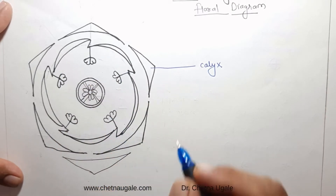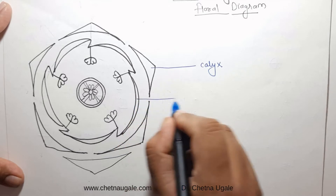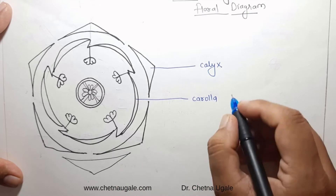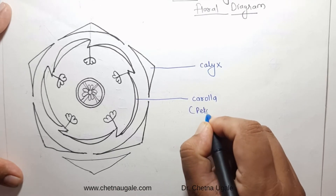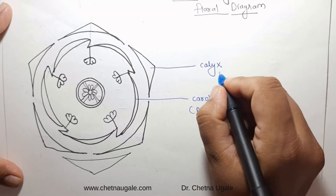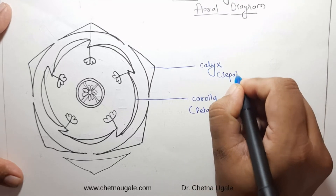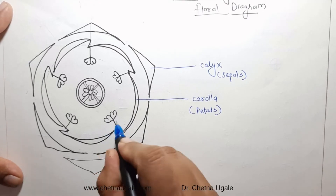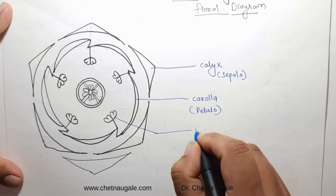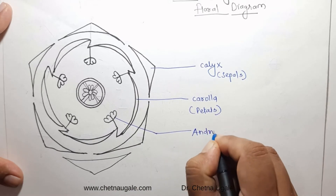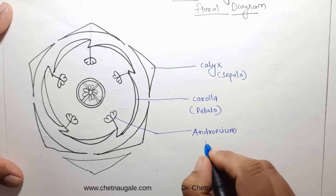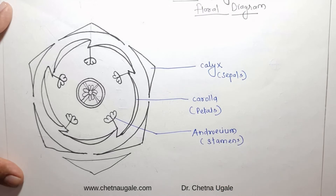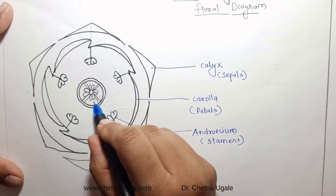Inner to the calyx there is a ring of the second non-essential floral whorl, that is the corolla, which is represented by the petals, while the calyx is represented by the sepals. The next essential floral whorl is the androecium, which is represented by the stamens.